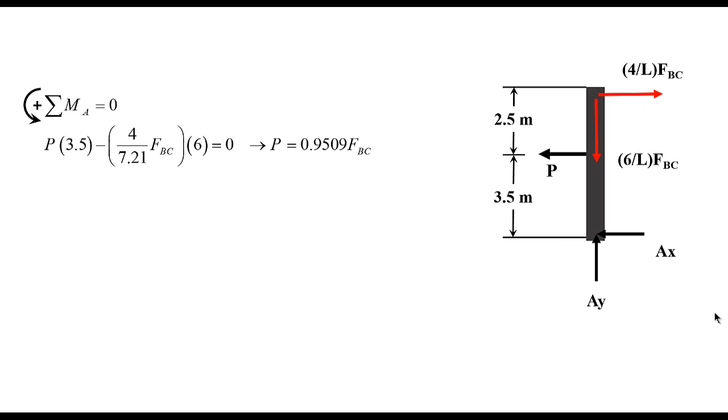And that should equal to 0, and you can notice that we only use the 4 over L FBC component, because the 6 over L FBC component, or the force 6 over L FBC, has a line of action that goes through the point of rotation, which basically, the distance to be rotated about, in this case 0, that's why it doesn't create any moments about point A. Now, if I solve for P using this equation, I will get 0.9509 FBC.